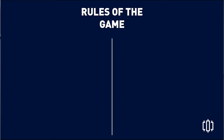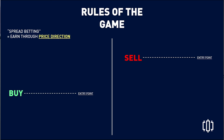Now the rules of the game — this is important to clear up any confusion about what you're buying or selling. It's simple: we only have buy and sell. When you press buy or sell, you execute a trade and you have an entry point based on what rate you got. How do you make money? Through spread betting — you earn through price direction, where the market goes. If you buy, the price needs to go up past your entry point. If you sell, the price needs to go down past your entry point.